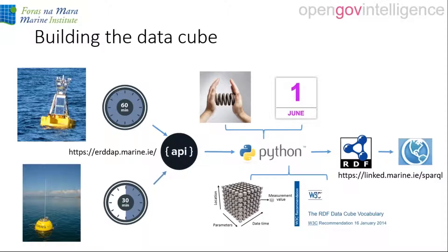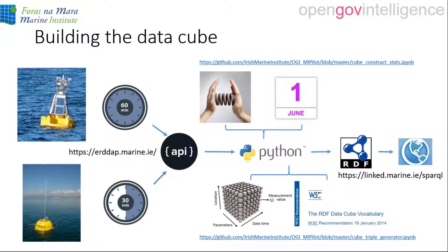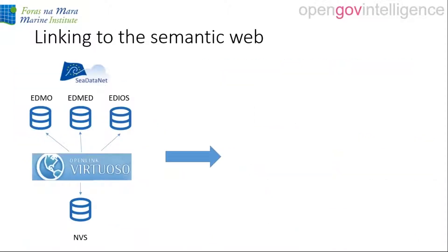We've put up Jupyter notebooks on GitHub that break down how this work has been done, also available via Binder so you can run them in the browser without installing packages. We're linking back to the semantic web through Sea DataNet, connecting to marine organizations, environmental datasets, observing systems, and vocabularies on the NERC Vocabulary Server including CF standard names and units.